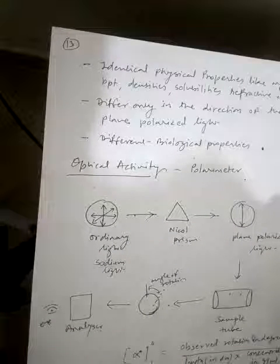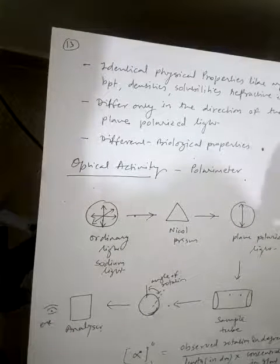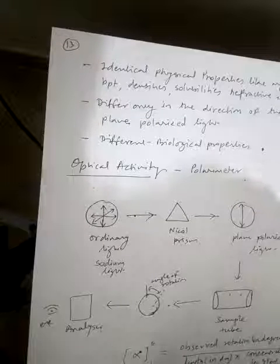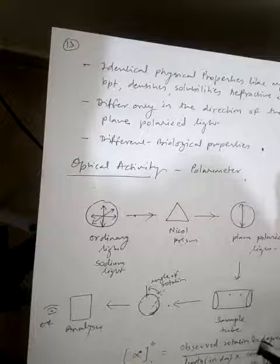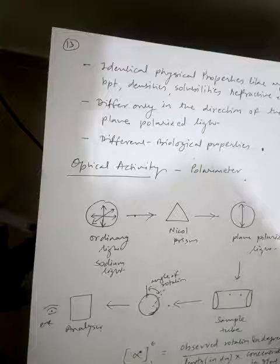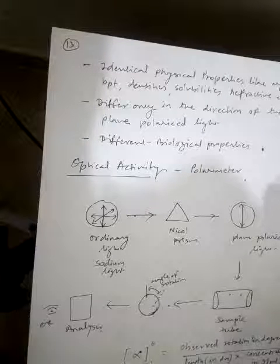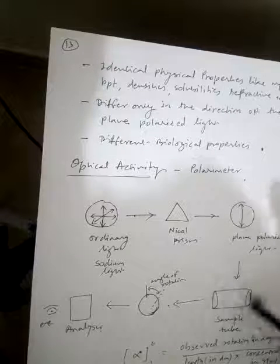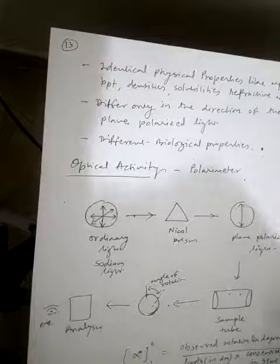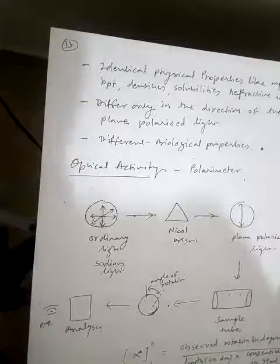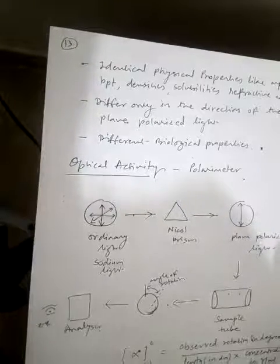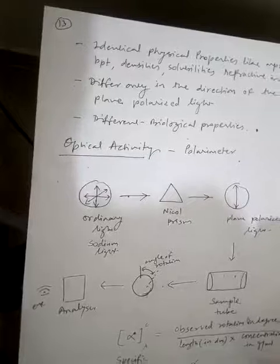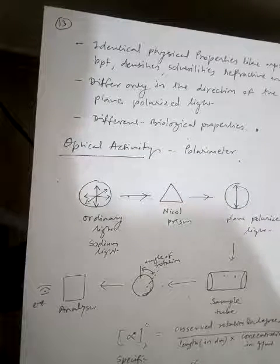There is a formula for measuring optical activity. Specific rotation is equal to the observed rotation in degrees divided by the length of the sample tube in decimeters multiplied by the concentration in grams per mL. That is: [α] = α / (L × C).